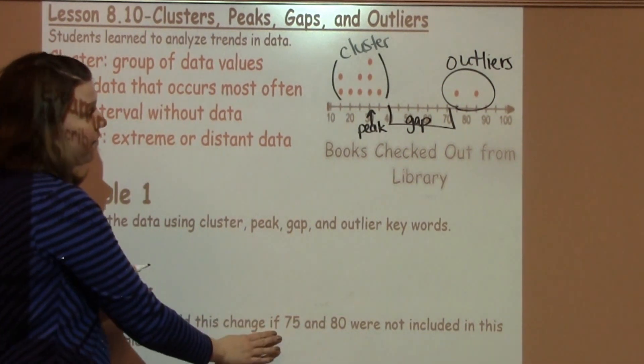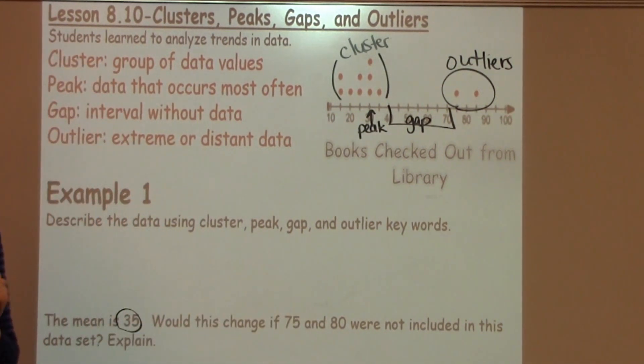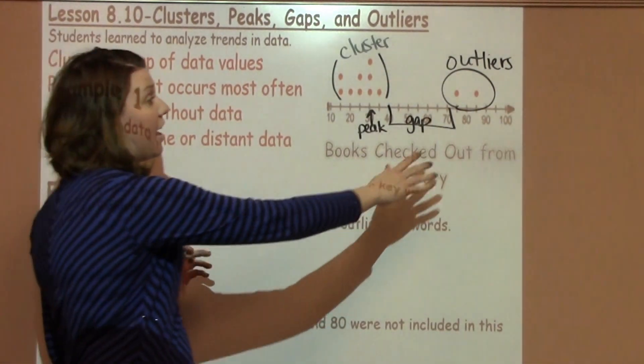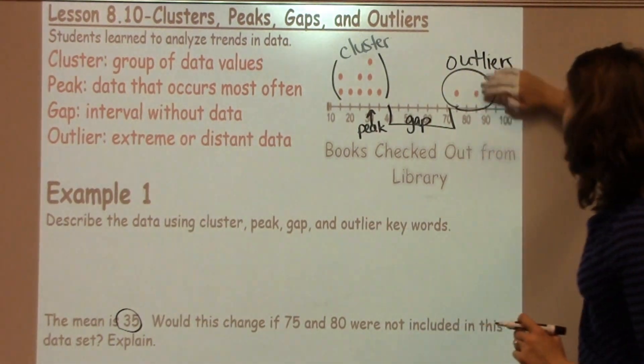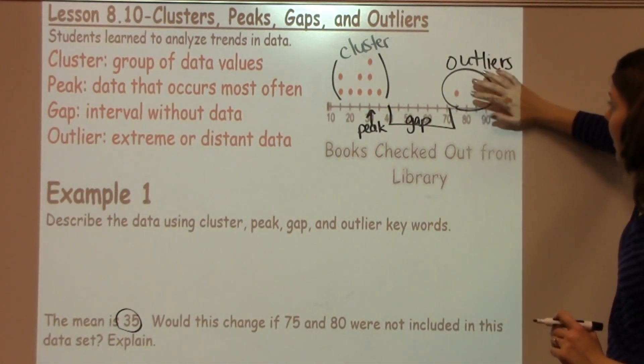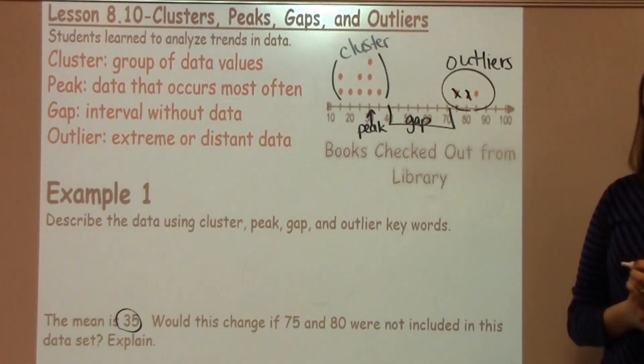Would this change if 75 and 80 were not included? Well, let's go ahead and look. 75 and 80 are my outlier data, and they are going to be over here. So when I look at this 75 and 80, if we did not include those two numbers, would that change my data?